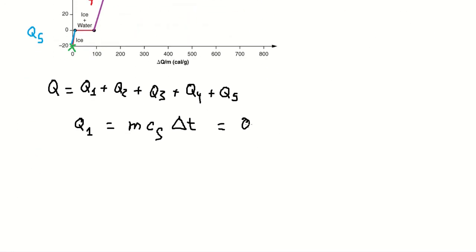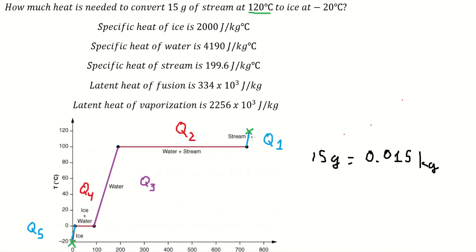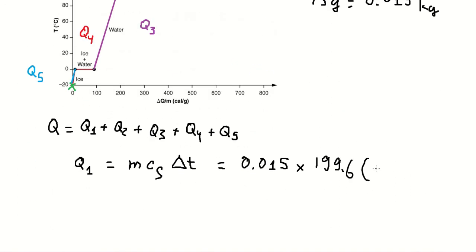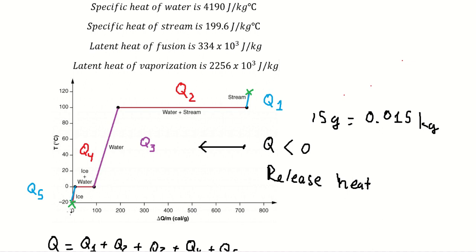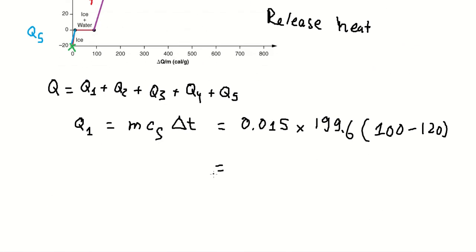So we put this number in here, and we have the numbers. We start at 120 and we stop at 100. Because we start in here and we go to the left on the process, that means the cube total should be about negative, because we need to release the heat. So that means the cube should be negative in here — you got the ice at the end. So you calculate this one, and we have negative 59.882 in here.